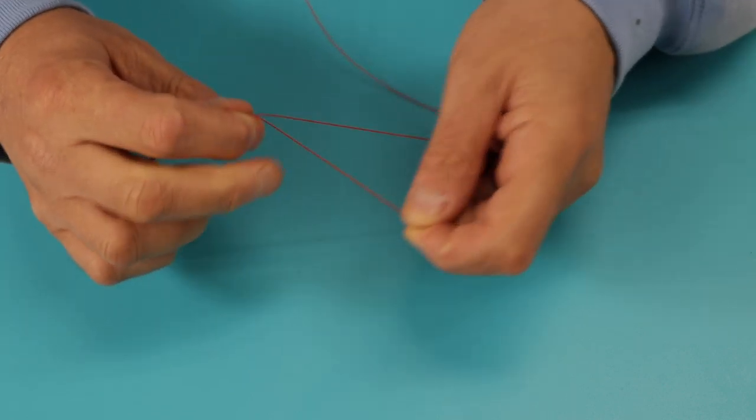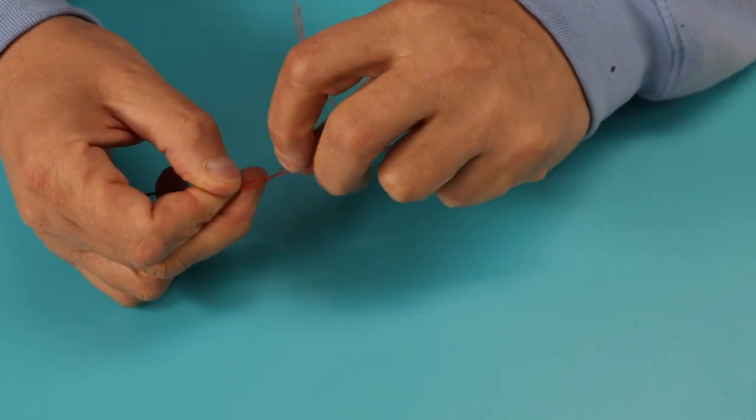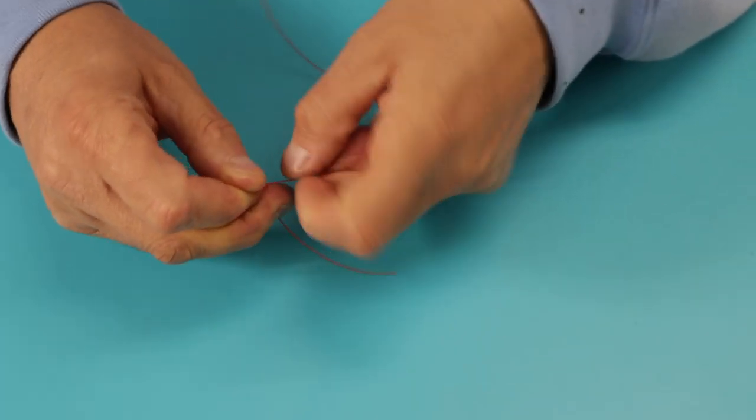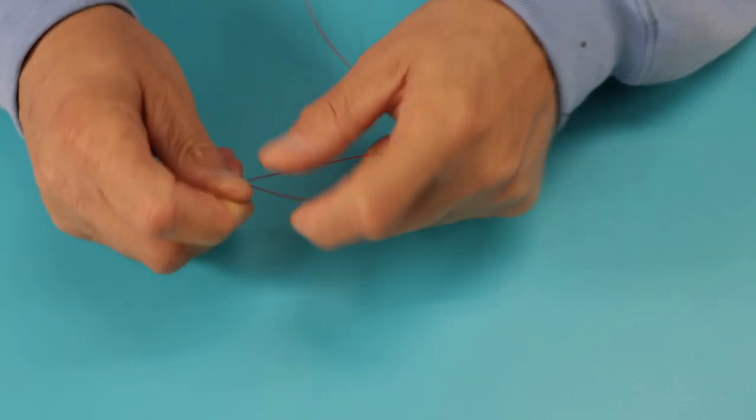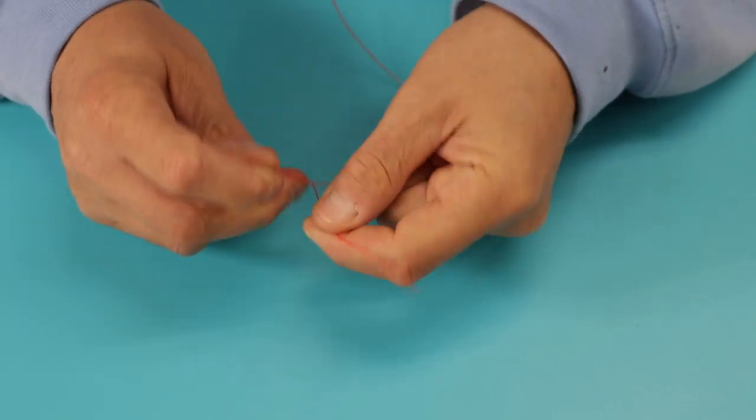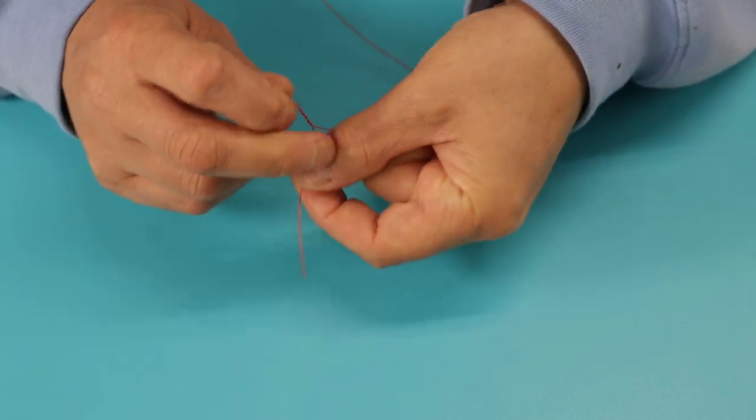Pinch the two lines together and take turns with the tag end around the main line. So that's one, two, three, four.